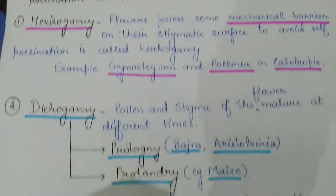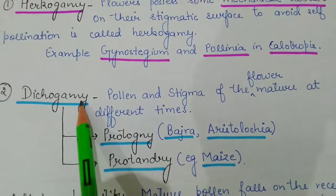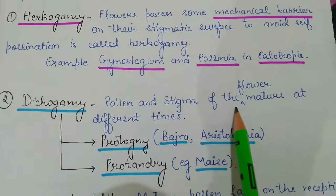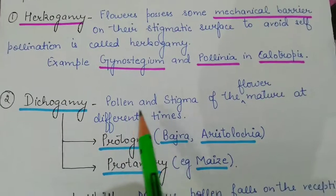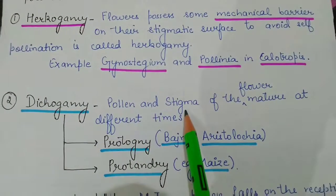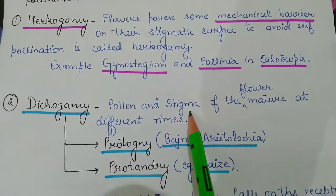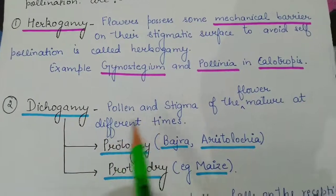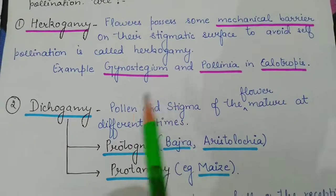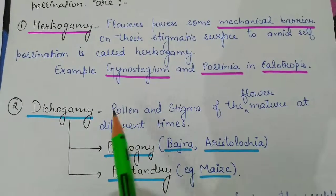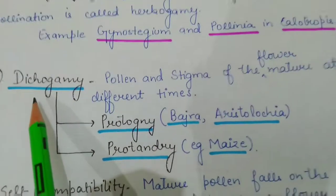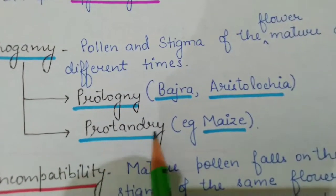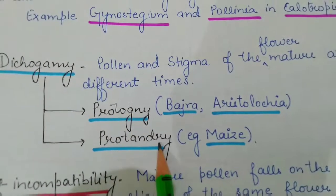The second character is dichogamy. In dichogamy, the male and female reproductive parts mature at different times so that self-pollination cannot occur. Dichogamy is further divided into two parts: protogyny and protandry.